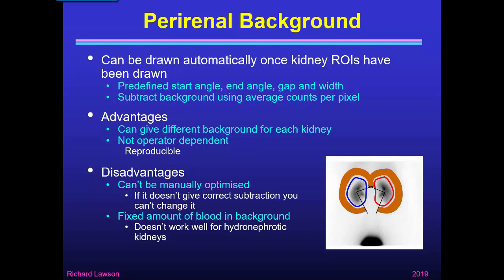It also gives a fixed amount of blood in the background — the background is mostly tissue but includes some blood from these regions. But it doesn't work well for hydronephrotic kidneys, where the amount of blood in the kidney is small because of the large amount of urine in the dilated renal pelvis, as I showed in the examples in part 3. And as I showed in part 4, it can also be upset by liver uptake of MAG3.